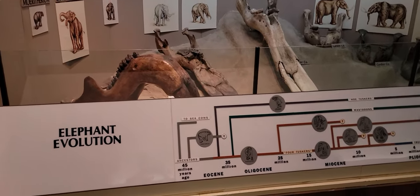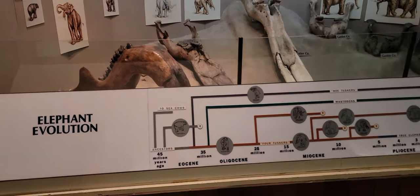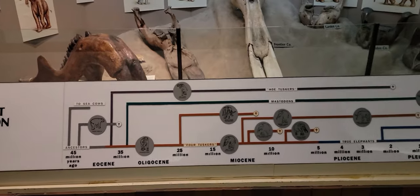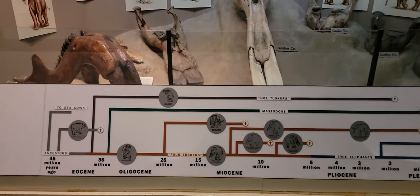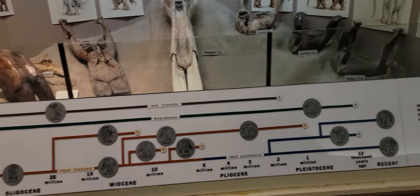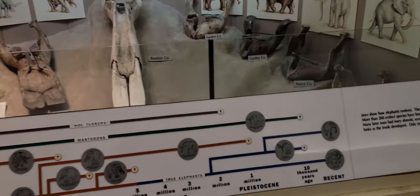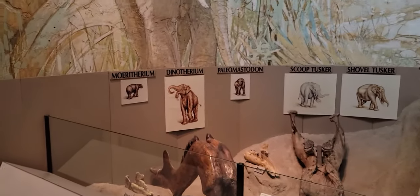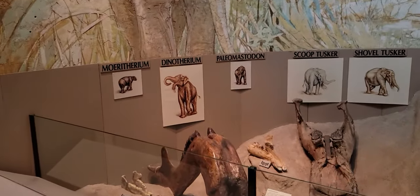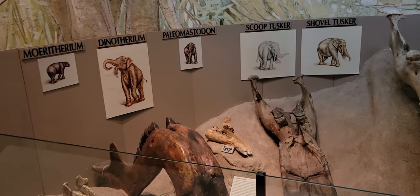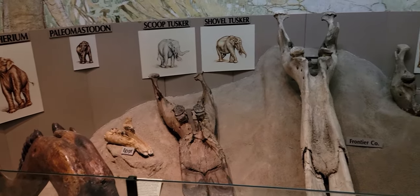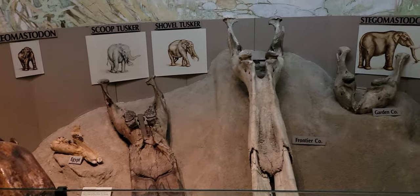This is the evolution of elephants — you can see how they evolved from a normal mammal to a tusked and trunked animal. There was something called Moeritherium, and from there they moved to Tuskers.